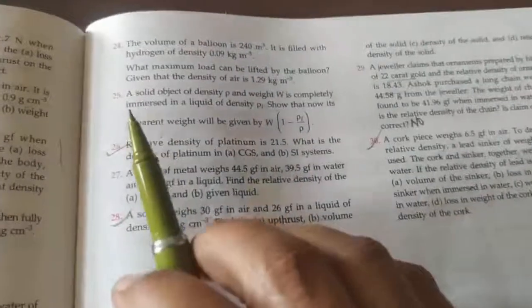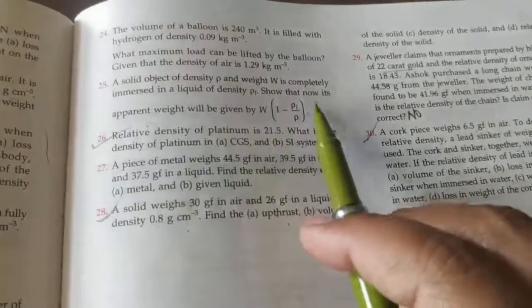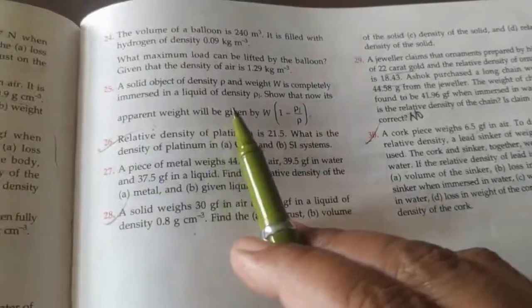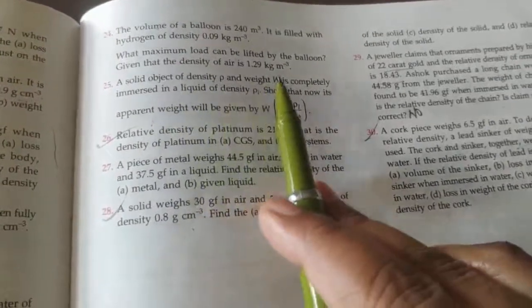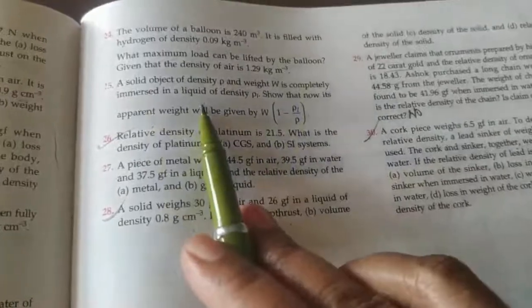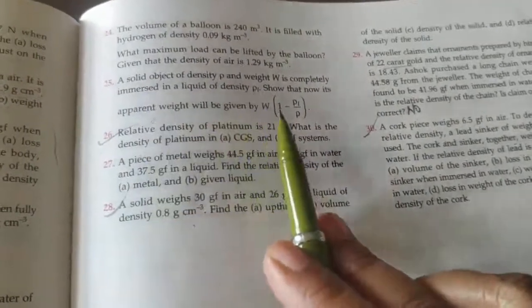Question number 25, a solid object of density rho and weight W is completely immersed in a liquid of density rho l. A solid object with density rho, weight W, is completely immersed in liquid, and that liquid's density is rho l. You have to show